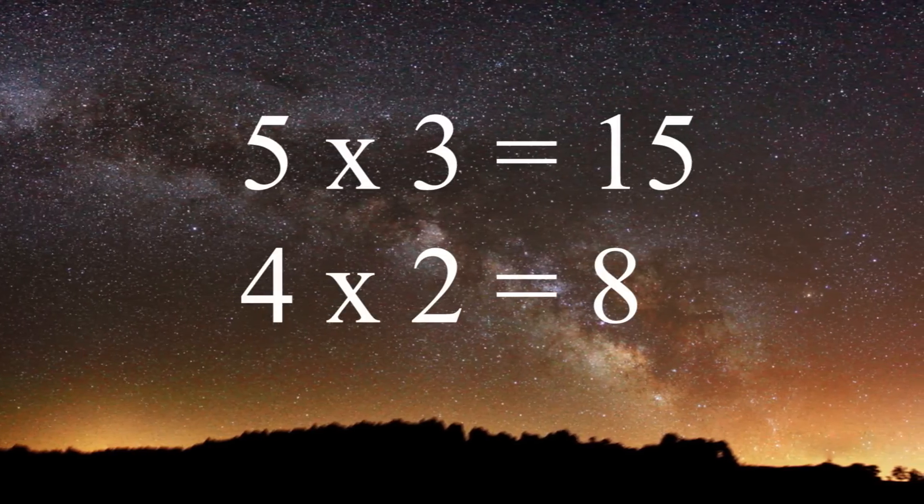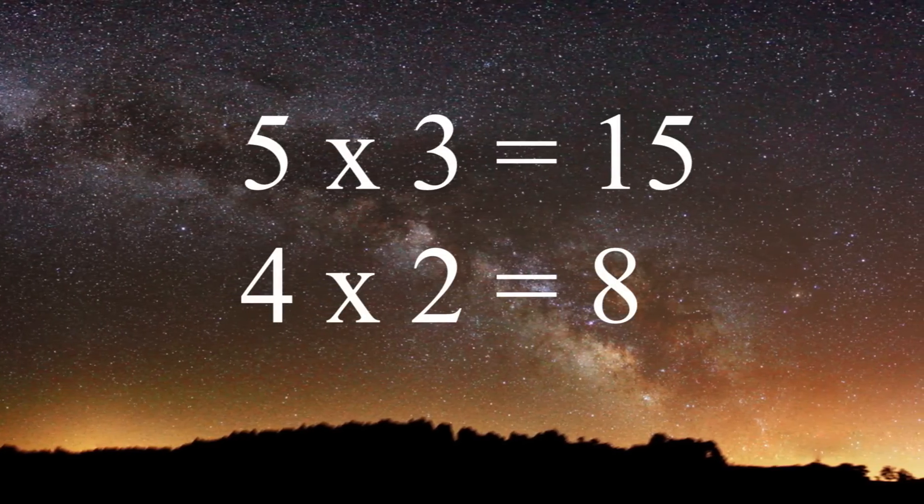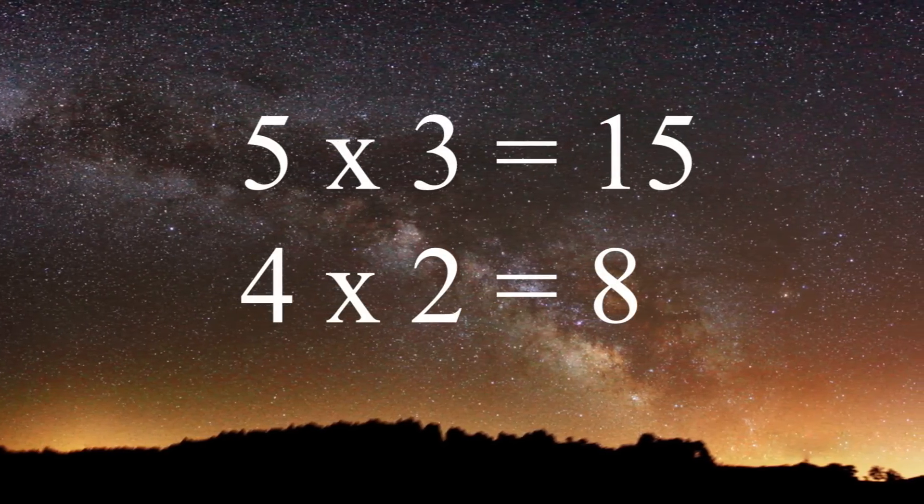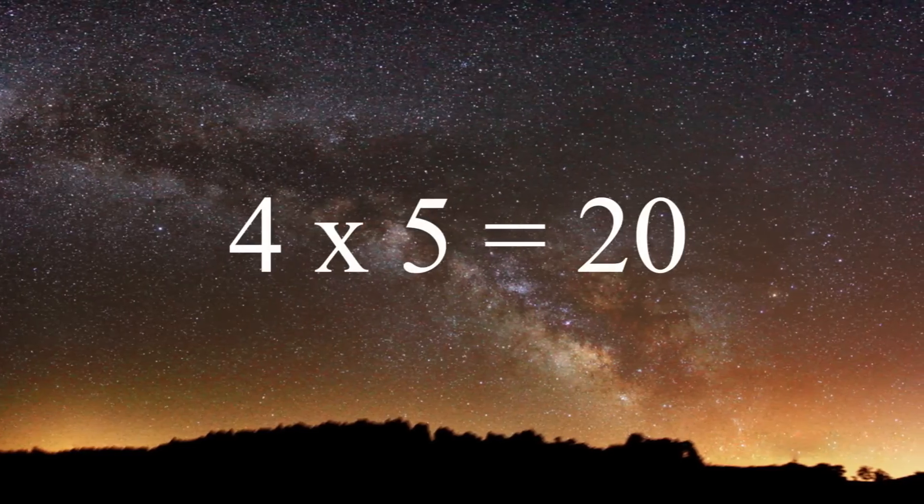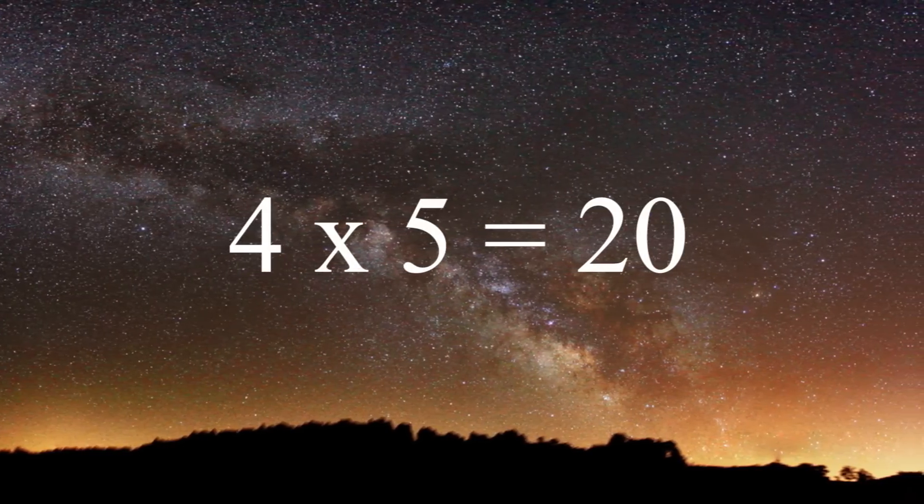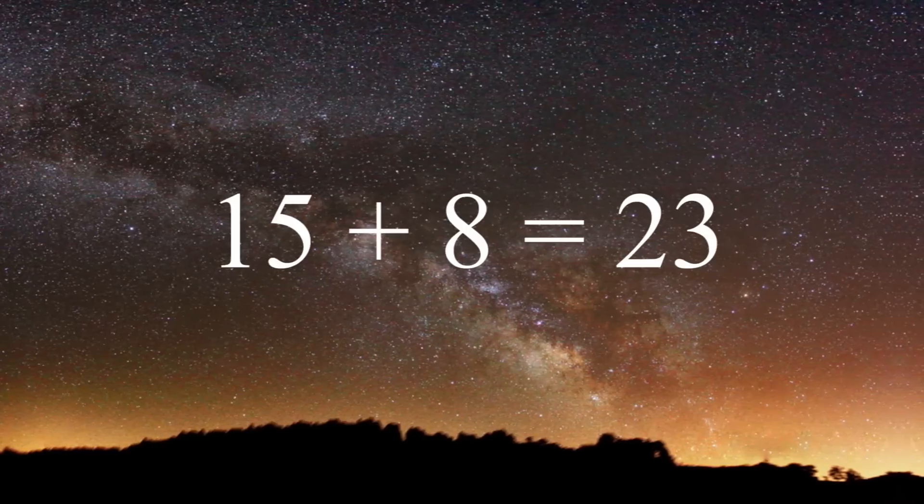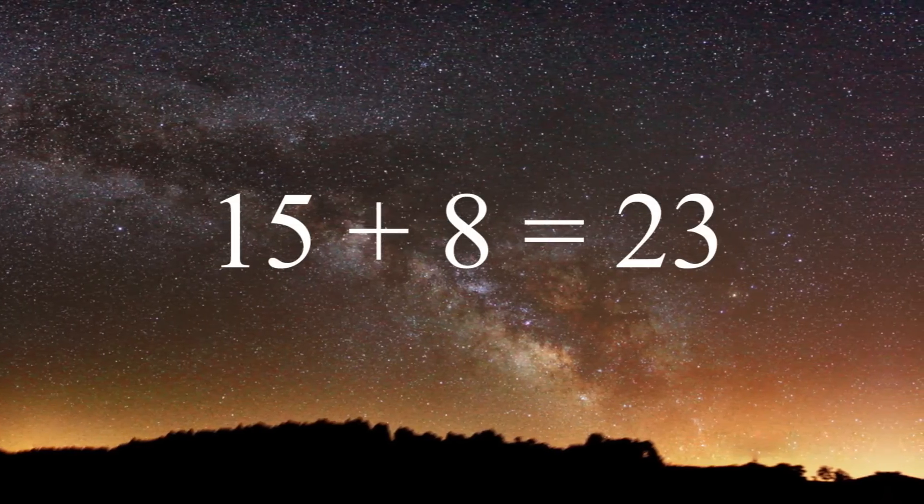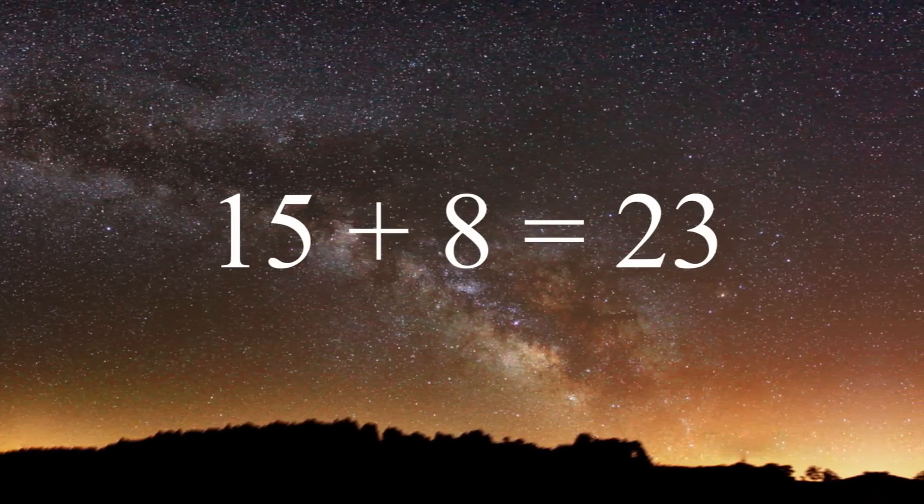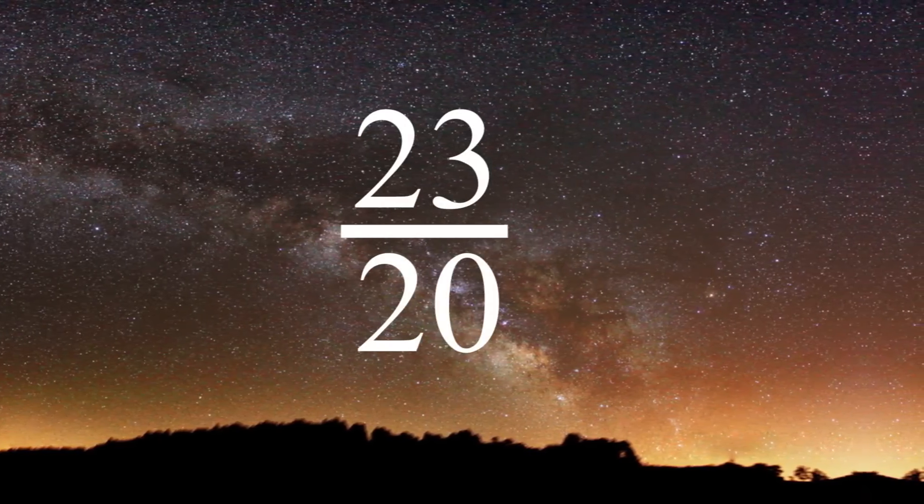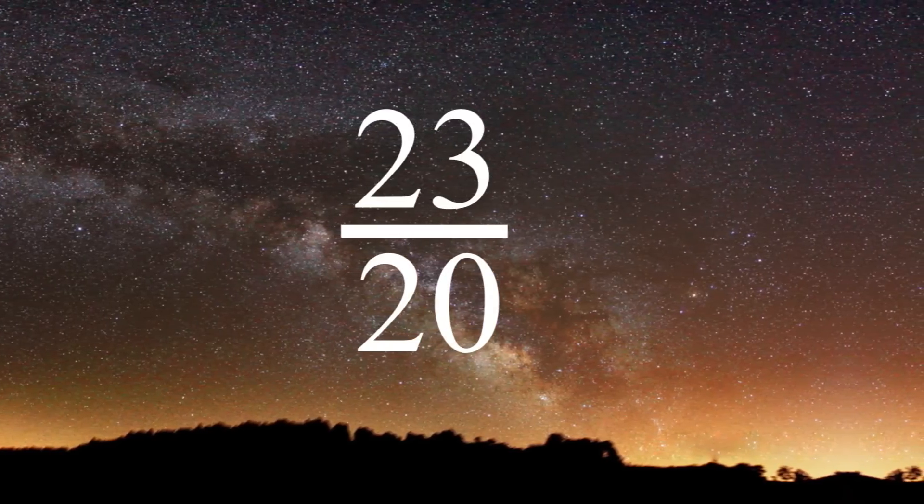Next, multiply the numbers that you circled. 5 times 3 equals 15, and 4 times 2 equals 8. Next, multiply the two bottom numbers. 4 times 5 equals 20. Finally, add the top two answers. 15 plus 8 equals 23. And you have the 20 from the bottom numbers, giving you 23 twentieths.